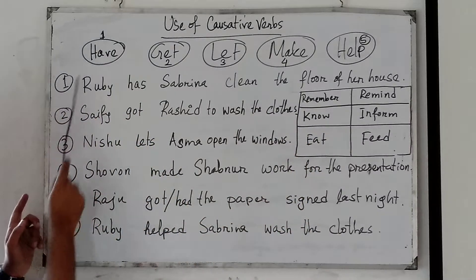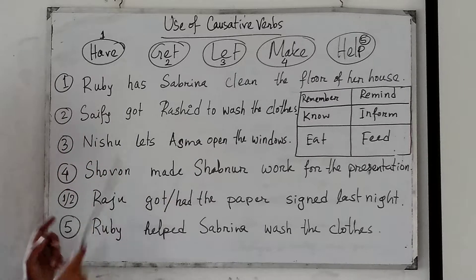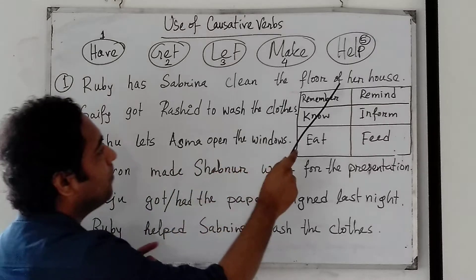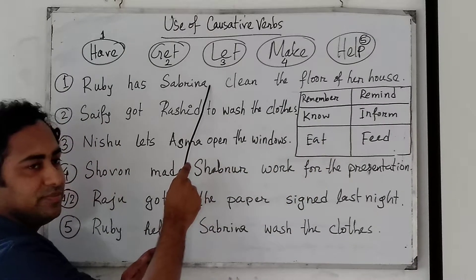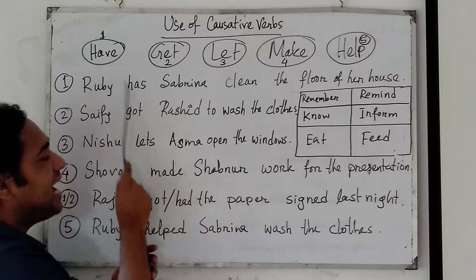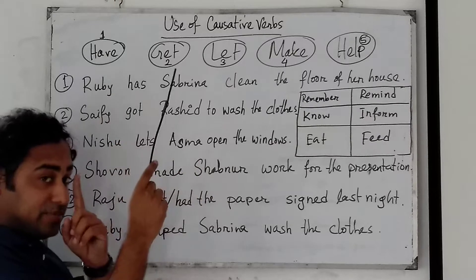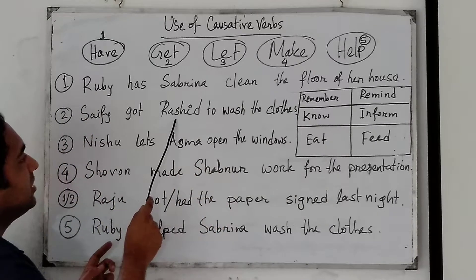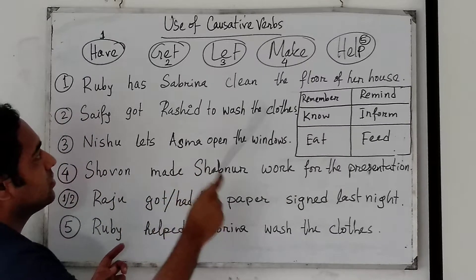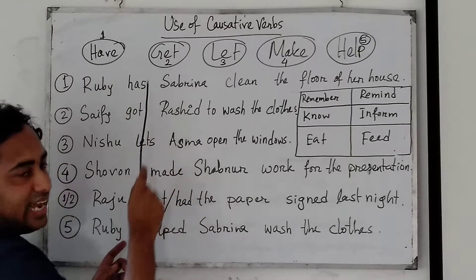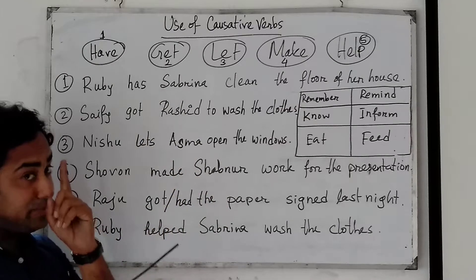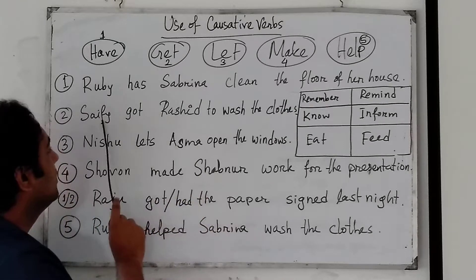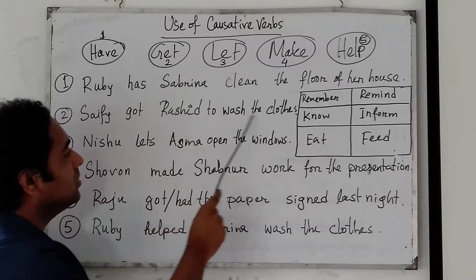Let me give you the first example. 'Ruby has Sabrina clean the floor of our house.' There is no 'to' — when there is have, has, or had in an active sentence, there will be no 'to' before the second verb. 'Saipi got Roshi to wash the clothes.' When there is 'get' as a causative verb in an active sentence, it will be 'to' plus verb in the second verb.